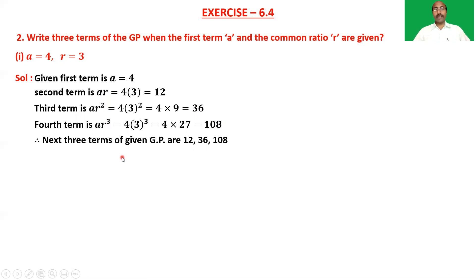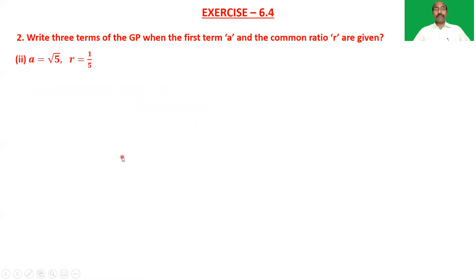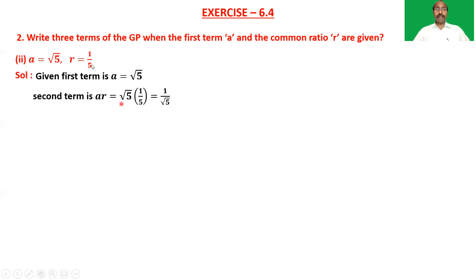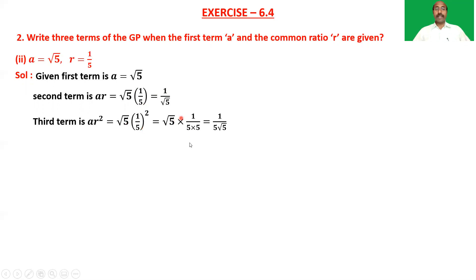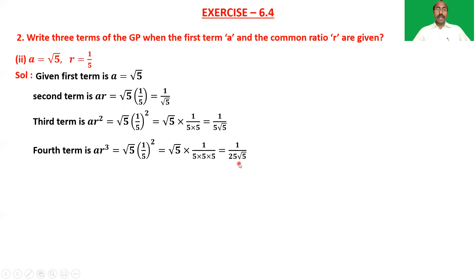For a = √5, r = 1/5: the second term is a·r = √5 × (1/5) = √5 / 5 = 1/√5. The third term is a·r² = √5 × (1/25) = 1/(5√5). The fourth term is a·r³ = √5 × (1/125) = 1/(25√5). So the next three terms are 1/√5, 1/(5√5), and 1/(25√5).